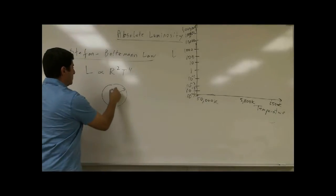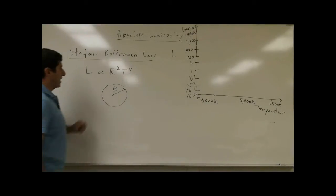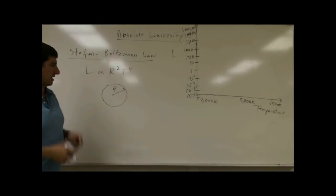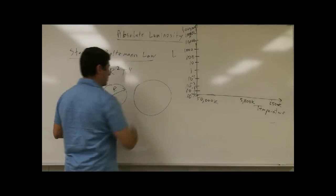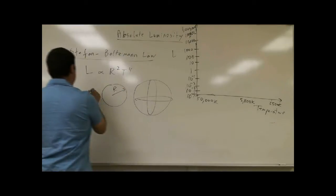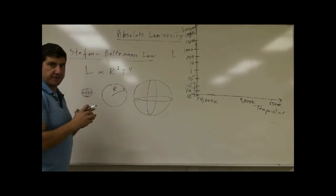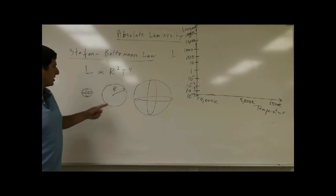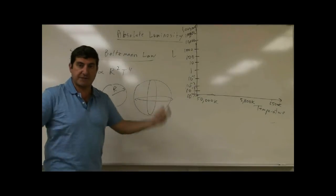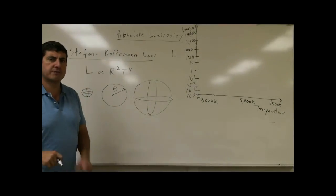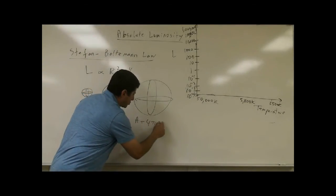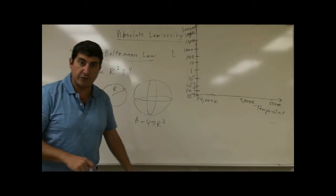The radius is a measure of the star's size. This law comes from the concept that the bigger the surface area of the star, the more surface area it will have. And if a star is small, it has a small surface area. So it makes sense that the bigger the star is, the brighter it will be, because it will simply have more surface area. The equation for the surface area of a star is A equals 4 pi r squared — the surface area of any sphere.